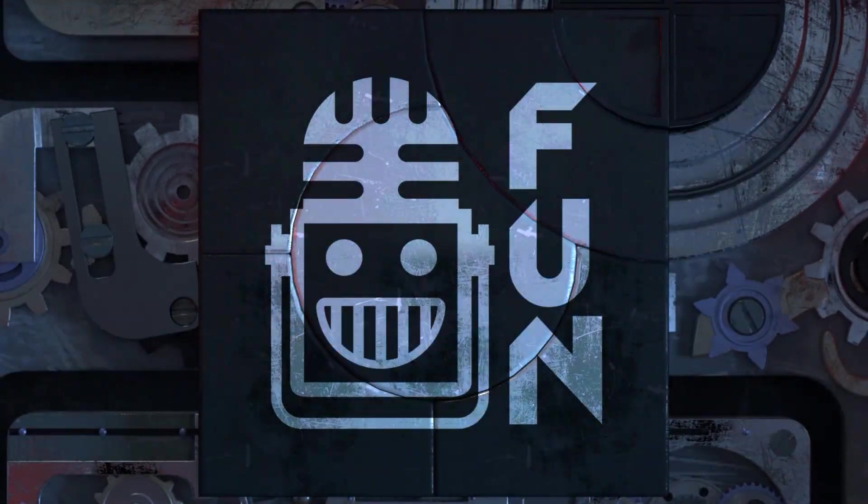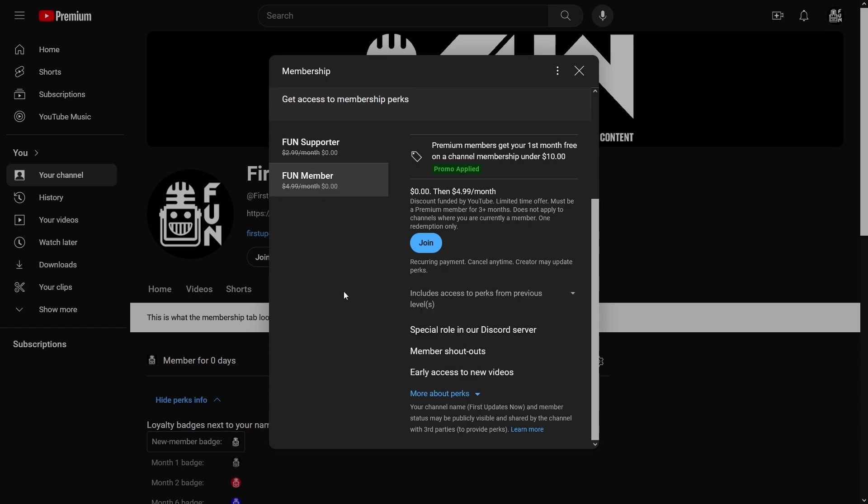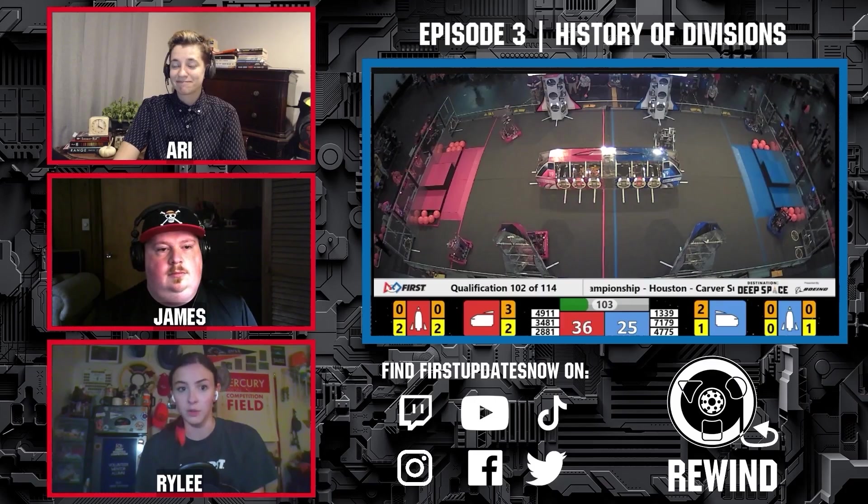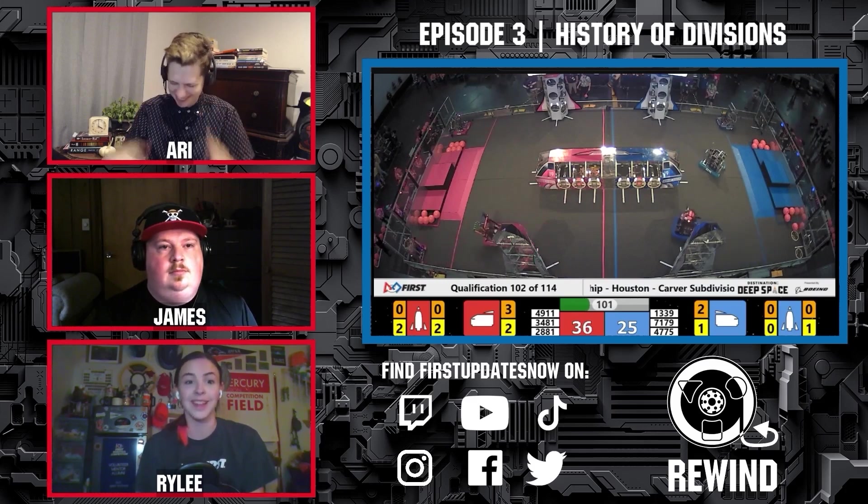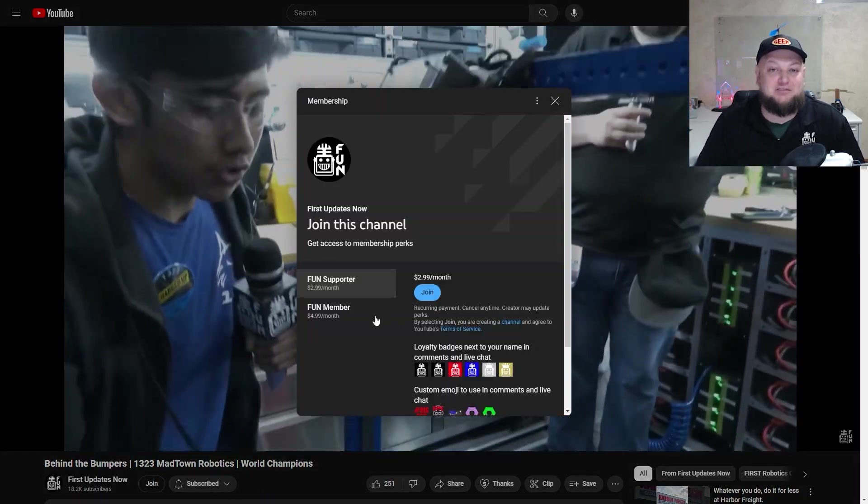Support FIRST's content creators when you sign up for a membership on YouTube. You'll get access to special perks like emotes, loyalty badges, and members will even get early access to our scheduled videos. 100% of this revenue will go back to our correspondents to help recognize their efforts. Click the join button in any YouTube video to pledge your support.